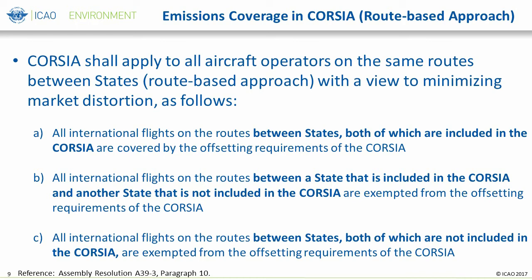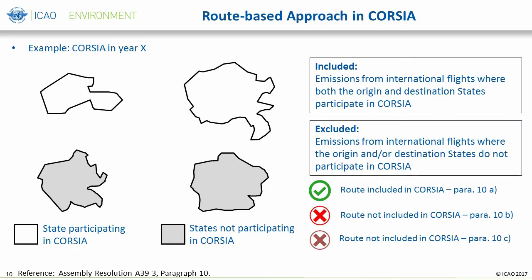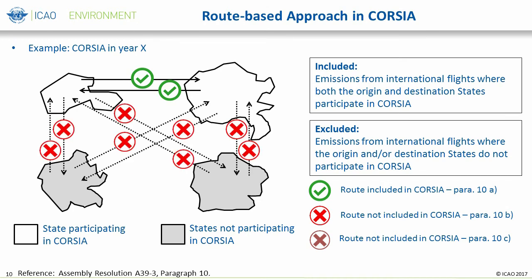This concept may be more easily understood through a simplified diagram. In this example, we are depicting a simplified world of four states. In year X, the two states at the top in white are participating in CORSIA, while the two states at the bottom in gray are not participating. Due to the route-based approach, the routes indicated with green checks are included in CORSIA, while the routes indicated with red and brown X's are not included. The green checks indicate routes between states that are both participating. The red X's indicate routes where only one state is participating, thus not included. The brown X's indicate routes between states where neither state is participating, thus not included either.